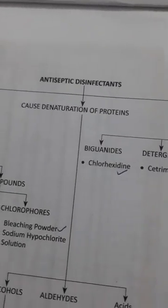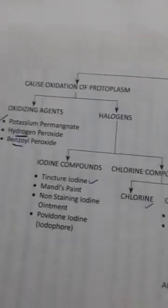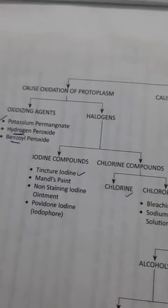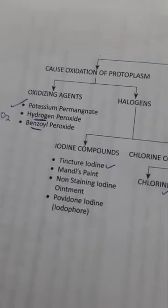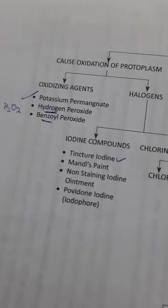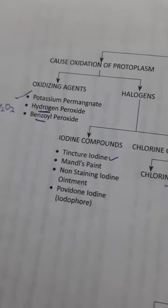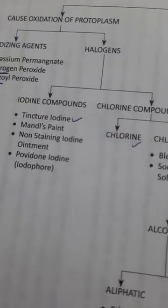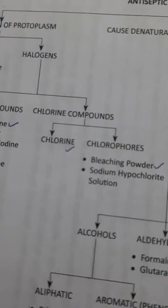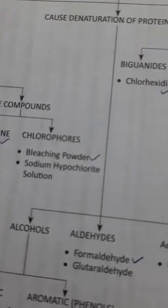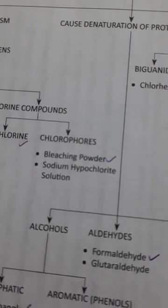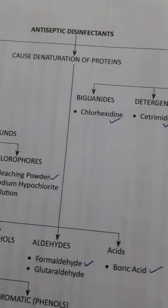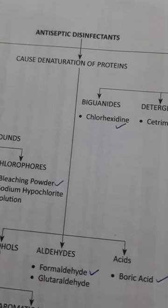Under classification of antiseptic disinfectants, the first category includes those which cause oxidation of protoplasm. These are the oxidizing agents: potassium permanganate, hydrogen peroxide, and benzoyl peroxide. Then halogens, which include iodine compounds like tincture iodine, and chlorine compounds including chlorine and chlorophores, which include bleaching powder.